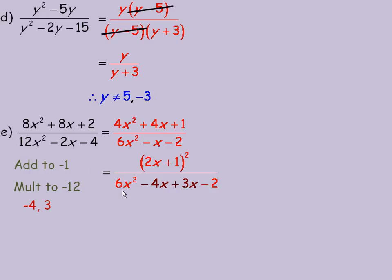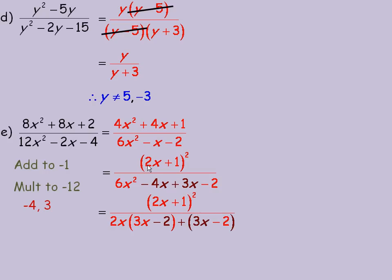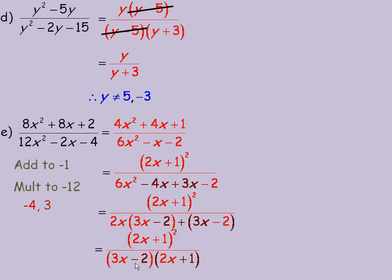Remember what we do: we break that middle term down into two terms with these coefficients. So we write 6x squared, and instead of writing negative x, we write minus 4x plus 3x, and then minus 2 at the end. Then we factor by grouping. The common factor in 6x squared minus 4x is 2x — factoring 2x out of 6x squared gives 3x, and out of negative 4x gives minus 2. There's no common factor in the last two terms, so we just put brackets around 3x minus 2. These two binomials must be the same, otherwise you've made an error. Common factoring out of the denominator gives 3x minus 2, and the other factor is 2x plus 1.